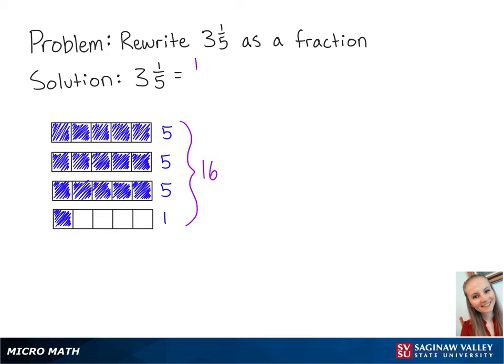This means that 16 is going to go in the numerator. The denominator represents how many parts are in each whole. So this will stay the same, and we will have 5 in the denominator. So 16/5 is our final answer.